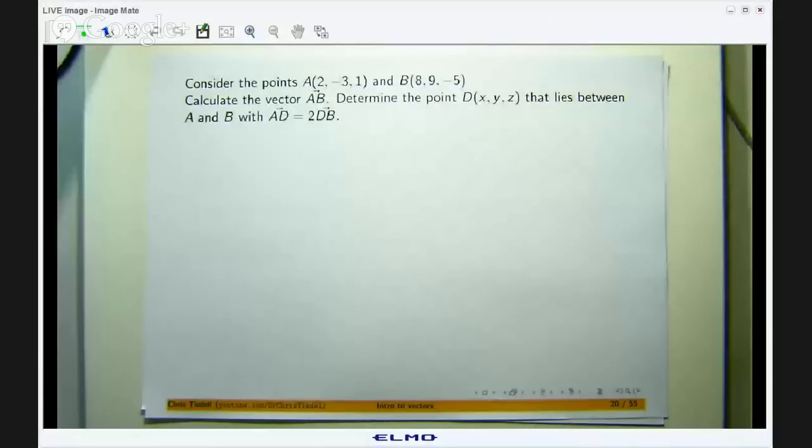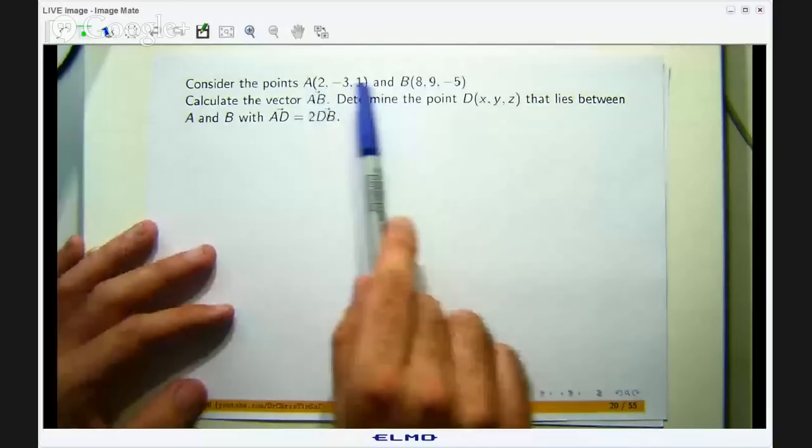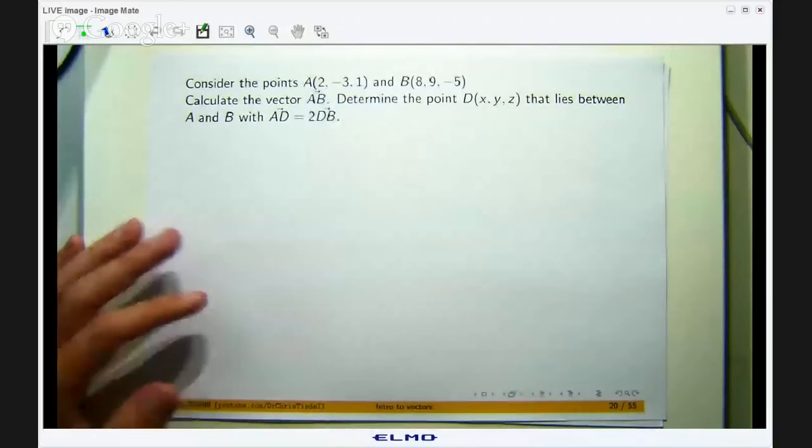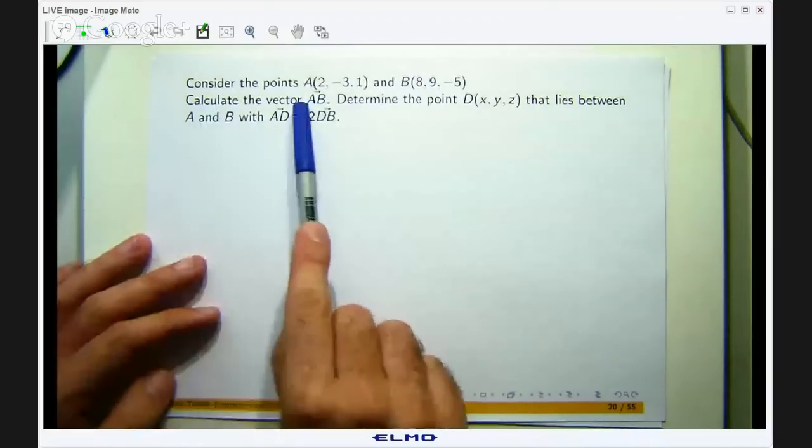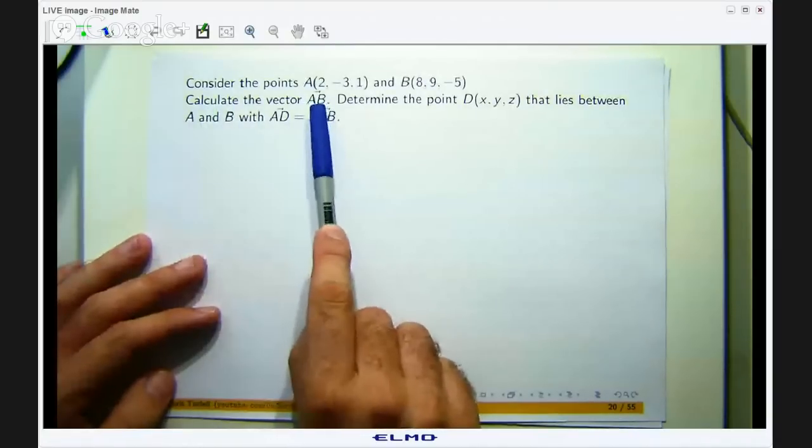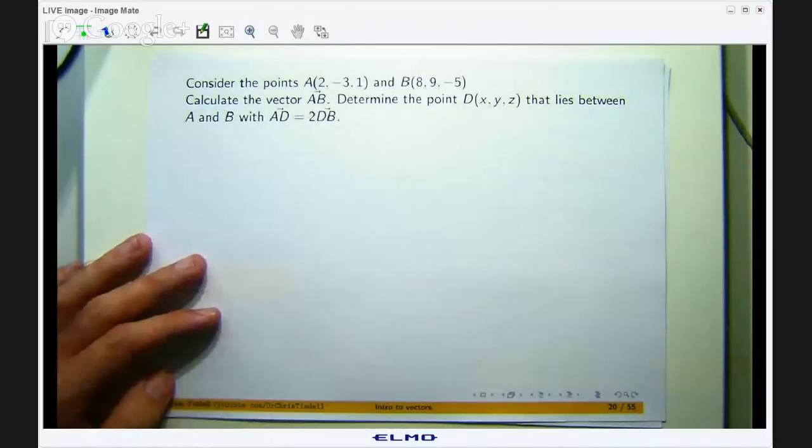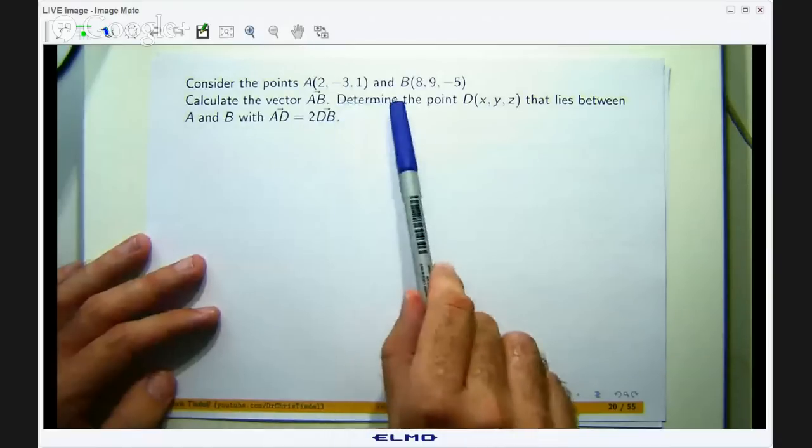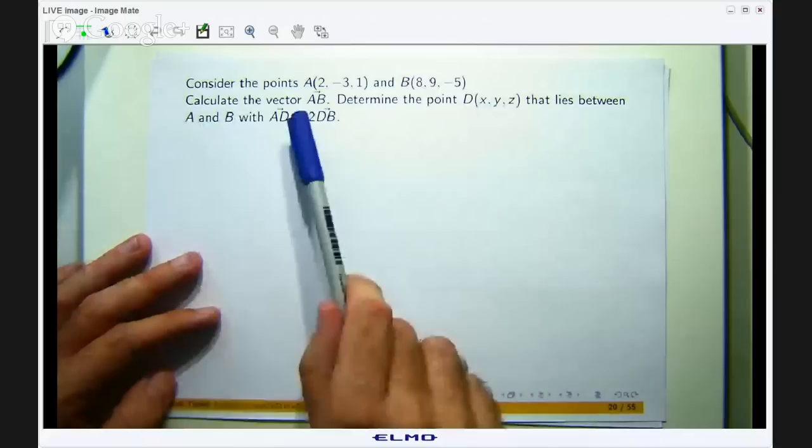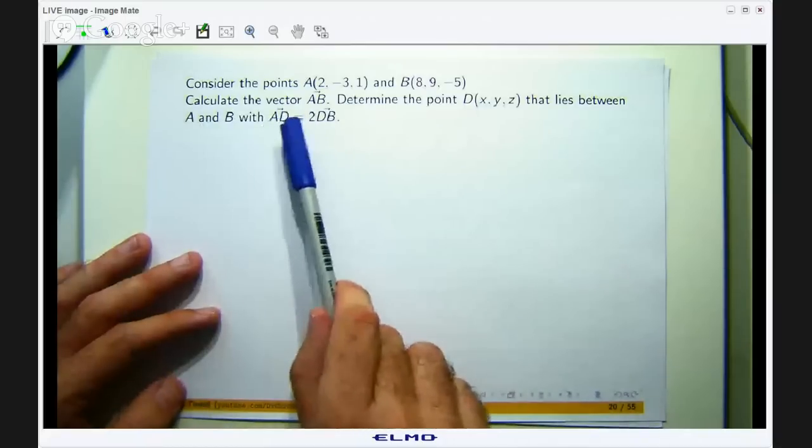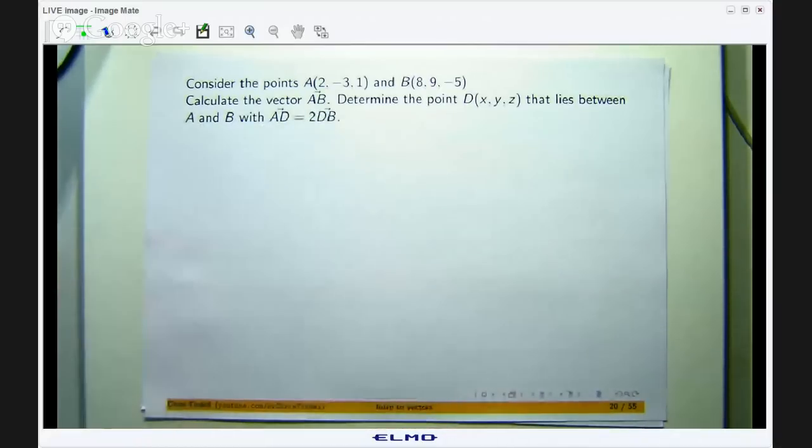Okay so we are given two points A and B in three dimensional space. We are asked to do a couple of things. Firstly we are asked to calculate the vector from the point A to the point B. And secondly we are asked to determine the point D that lies between A and B such that the vector AD is twice vector DB.